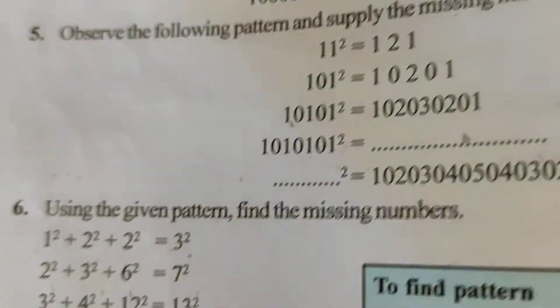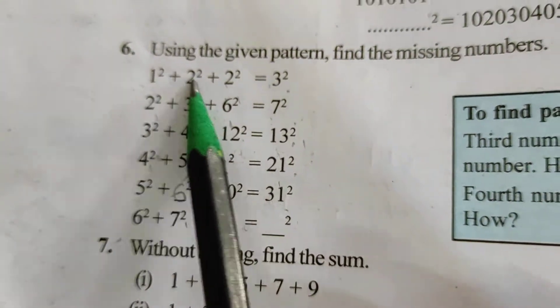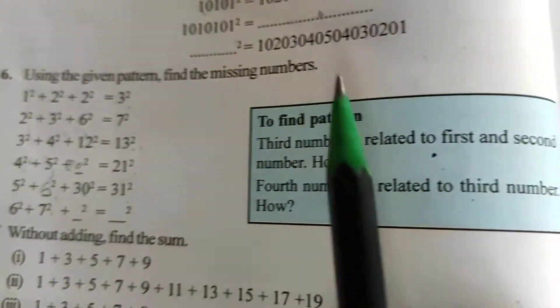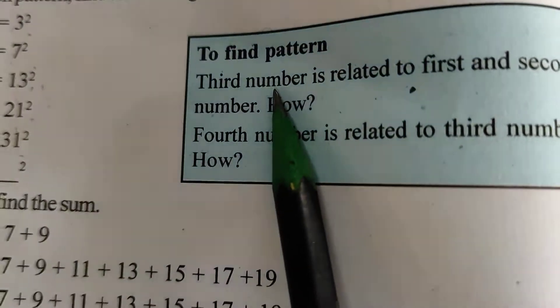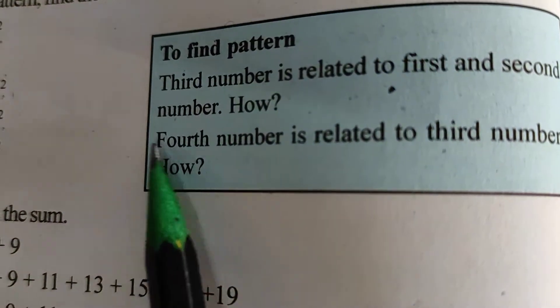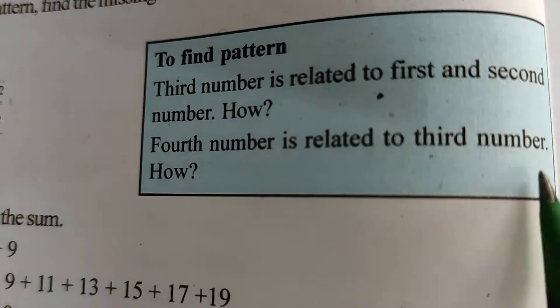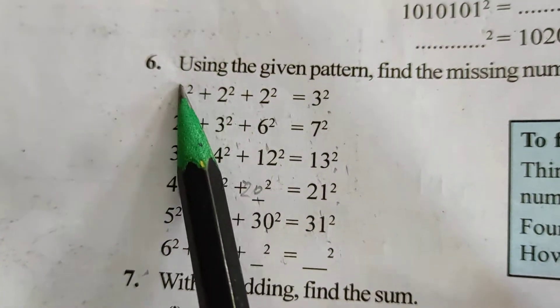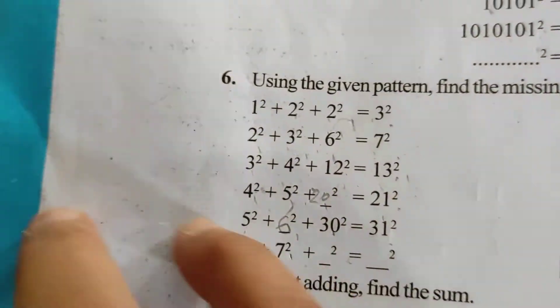You can see here: the 3rd number is related to the 1st and 2nd number, and the 4th number is related to the 3rd number. So the 1st and 2nd are related to the 3rd number.